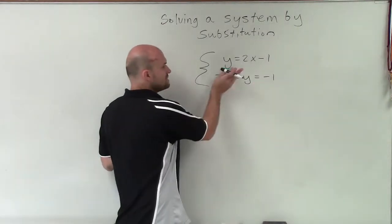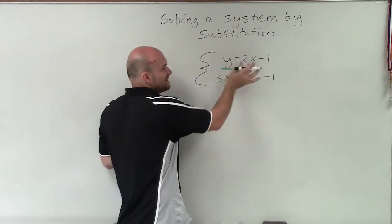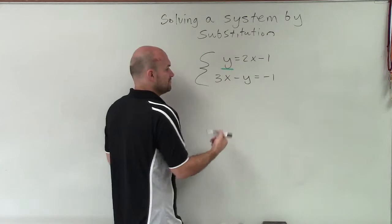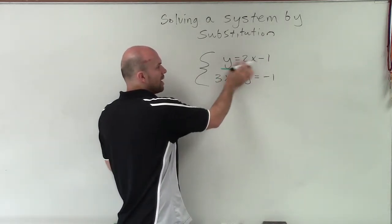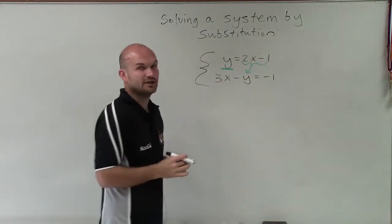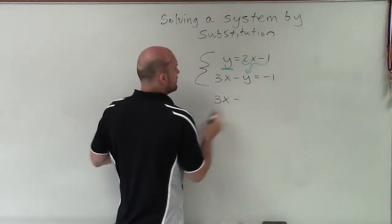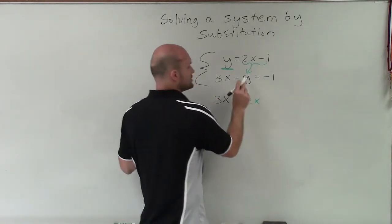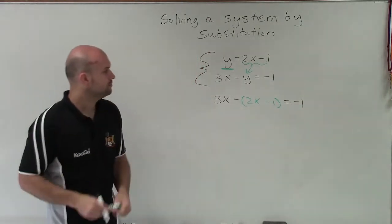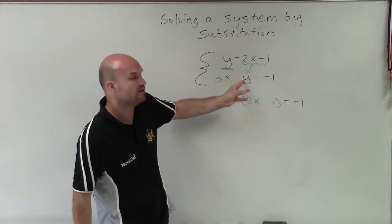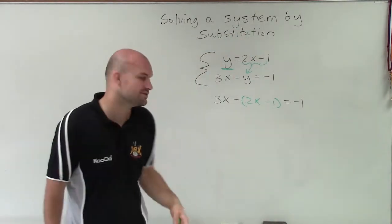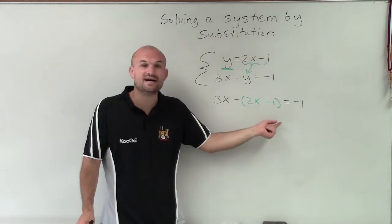So what I'm going to do is, once I have a variable isolated, I'm going to take the value of that variable and place it in for the variable in the other equation. So I'm going to take the value of y, which is 2x minus 1, and replace it in for y in the other equation. So it's going to look like this: 3x minus, not just y, but minus 2x minus 1 equals negative 1. What I did is I replaced the value of y with its expression 2x minus 1.